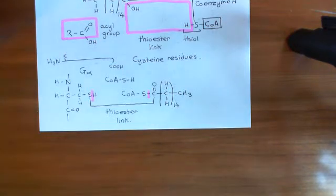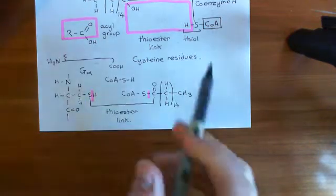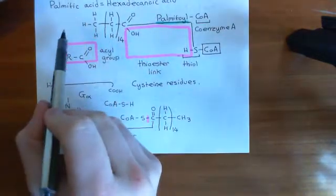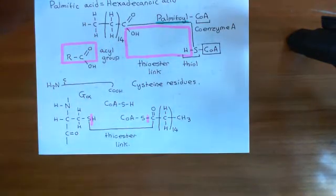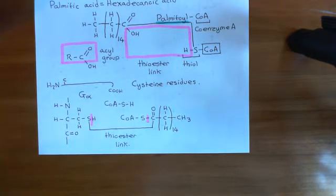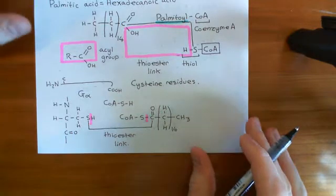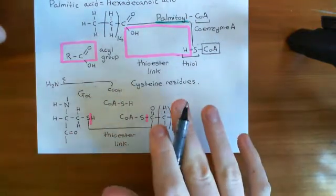The functional importance of this palmitoyl group is that it forms a large hydrophobic tail that anchors into the hydrophobic core of the lipid bilayer. This holds the alpha subunit at the inner leaflet of the phospholipid bilayer, so that it's not dangling around in the cytoplasm — instead it's anchored at the inner face of the phospholipid bilayer. That's S-palmitoylation.